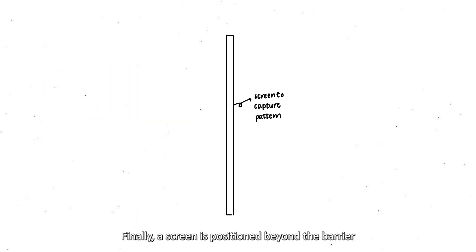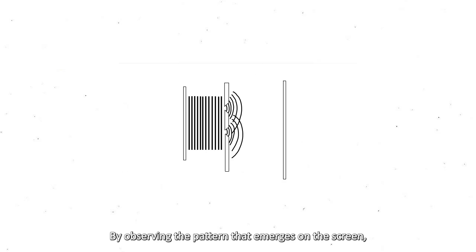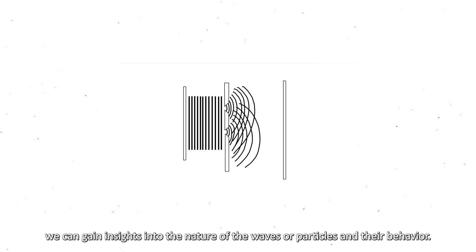Finally, a screen is positioned beyond the barrier to capture the pattern that forms. The screen can be a photographic plate, a detector, or any suitable surface that can record the impact of the waves or particles. By observing the pattern that emerges on the screen, we can gain insights into the nature of the waves or particles and their behavior.